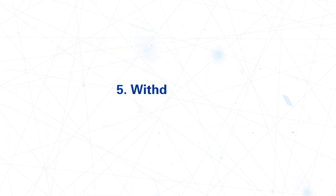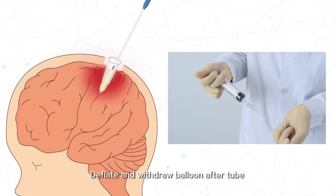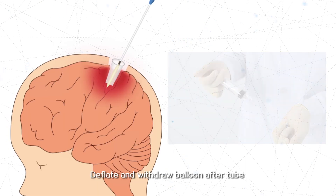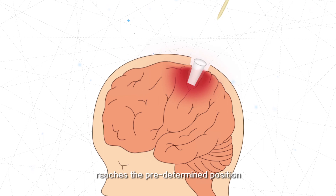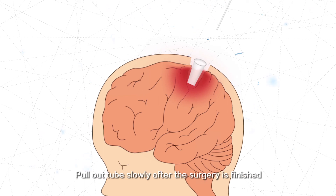Step 5: Withdrawing. Deflate and withdraw the balloon after the tube reaches the predetermined position. Pull out the tube slowly after the surgery is finished.